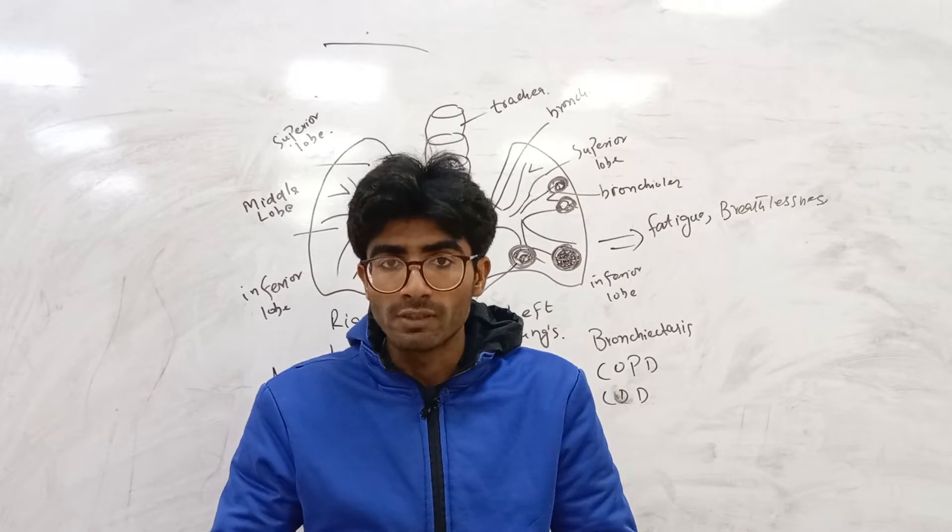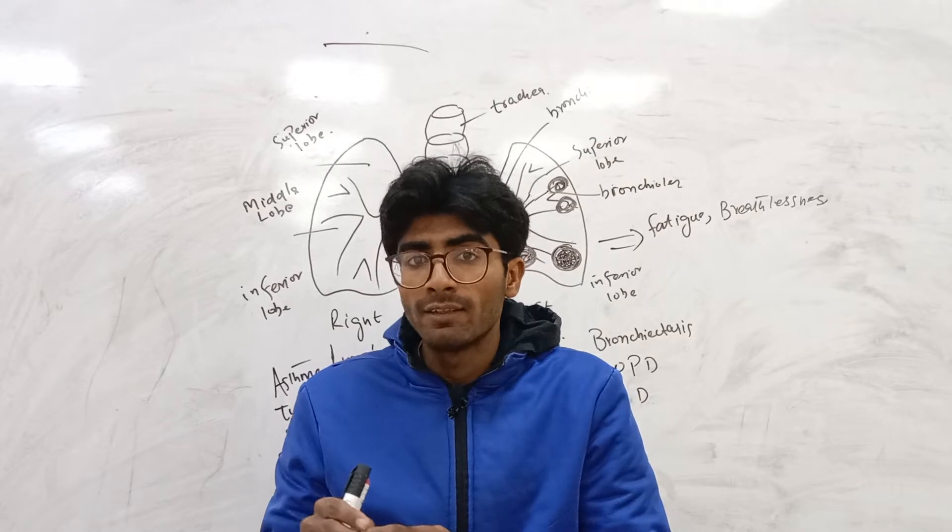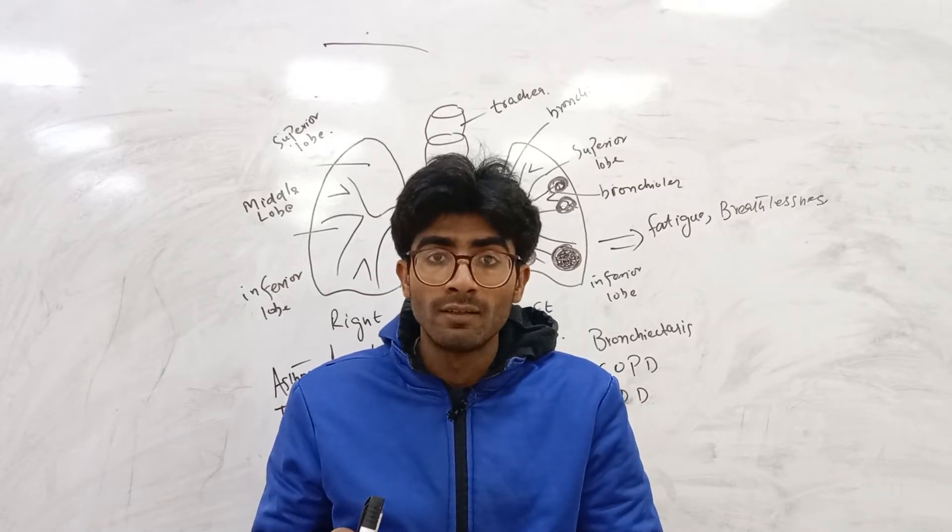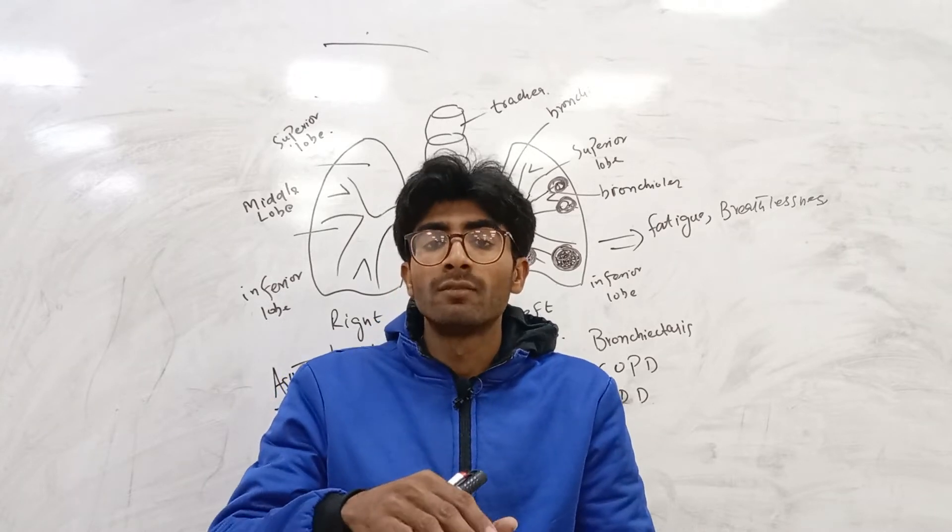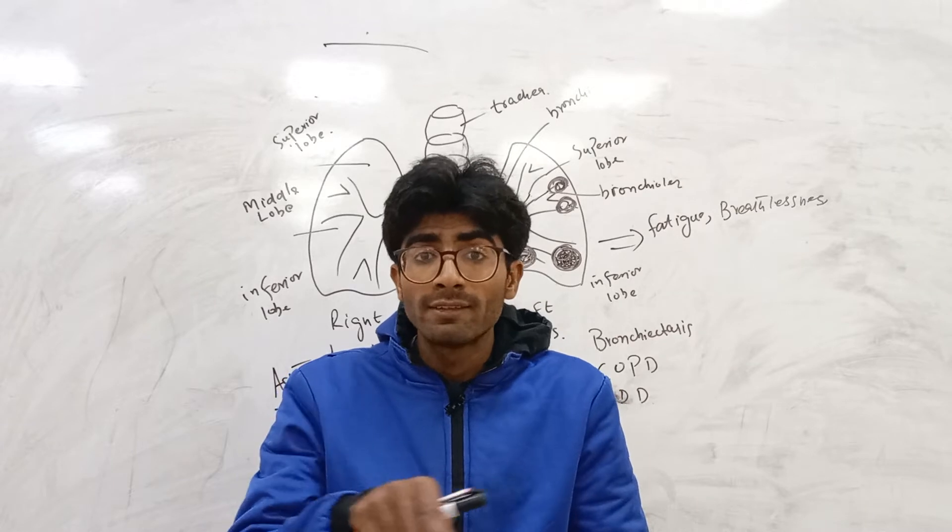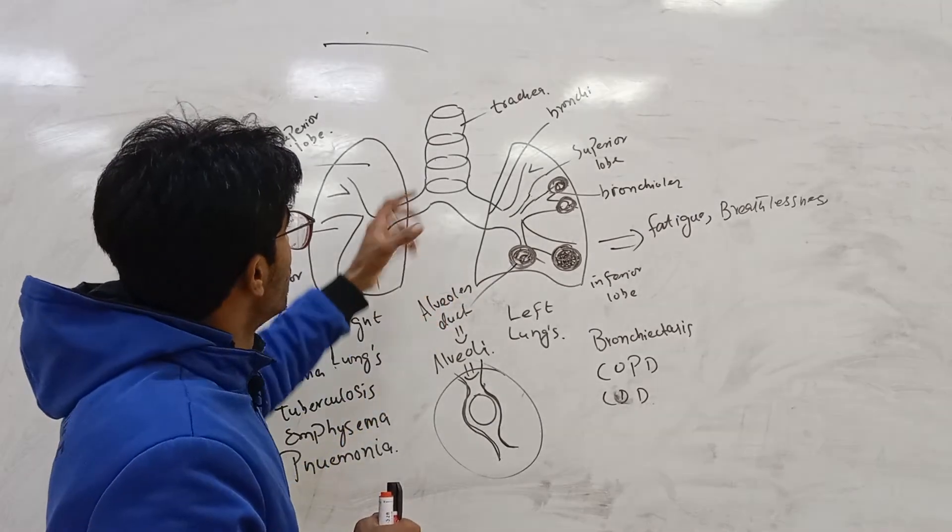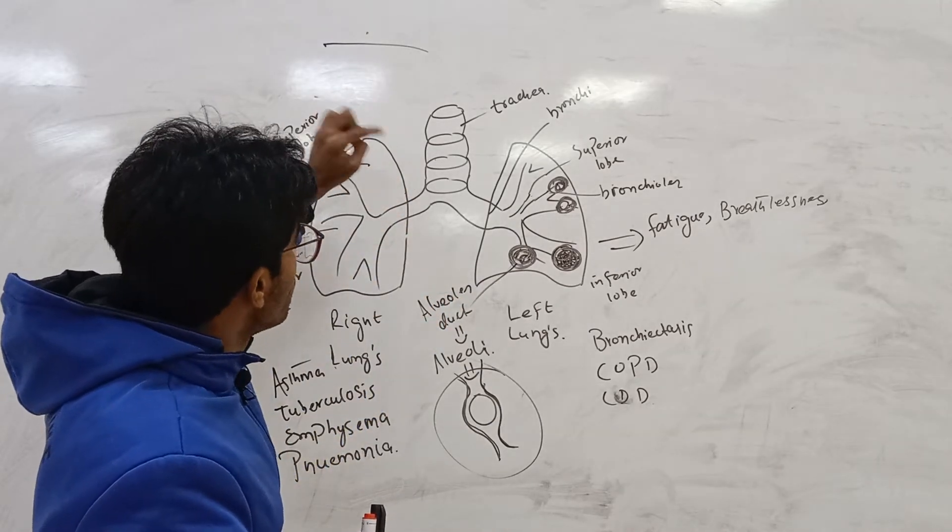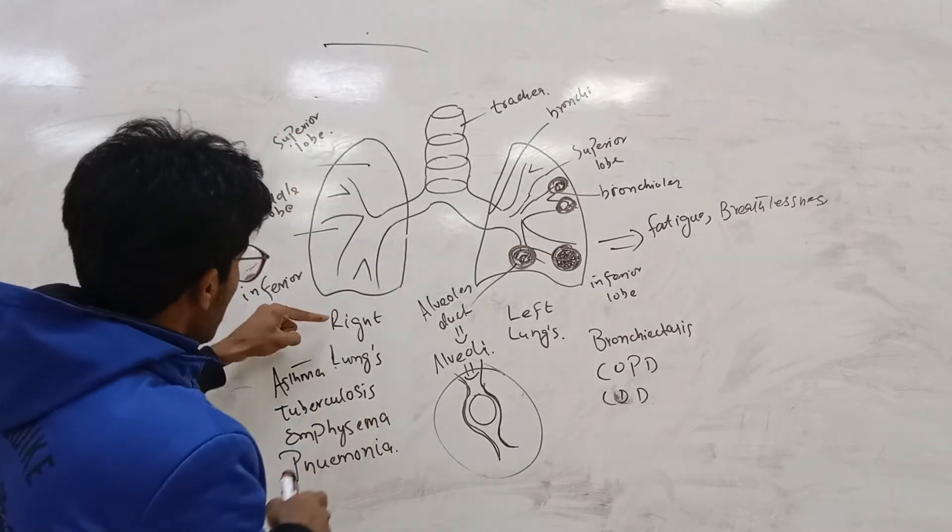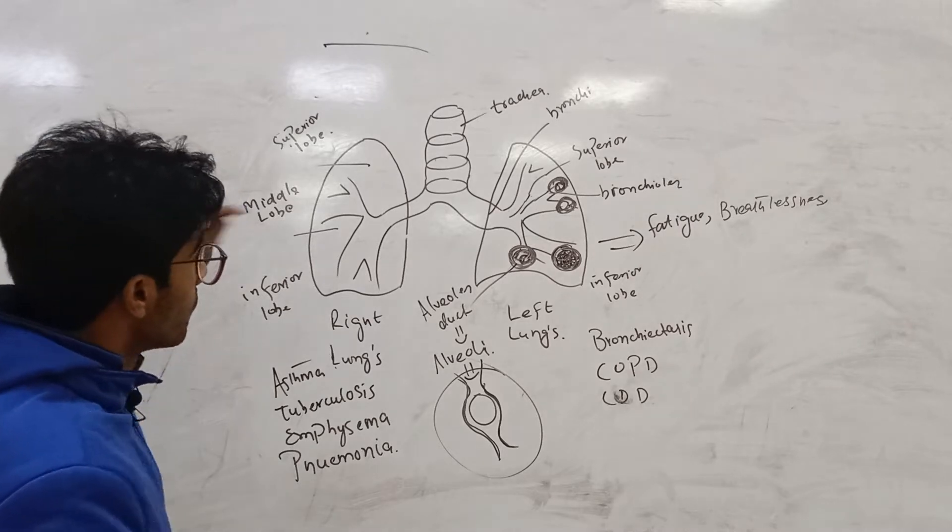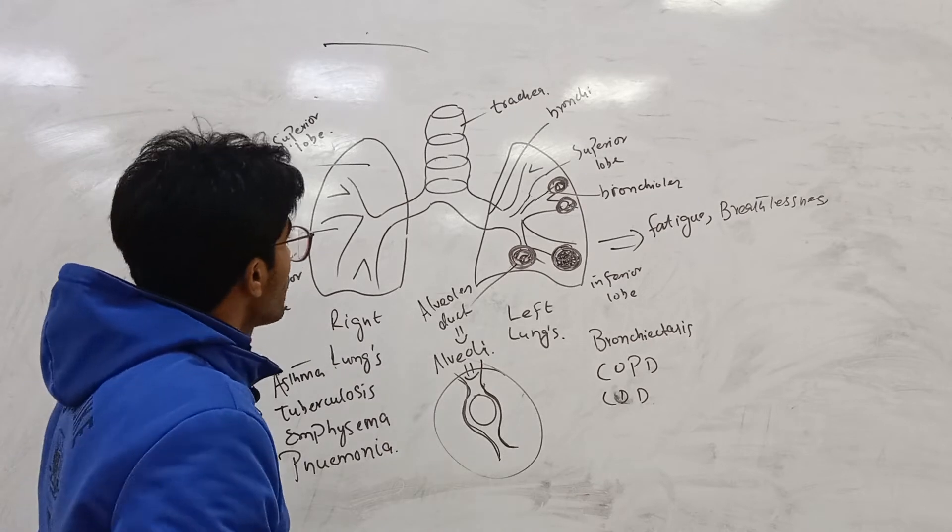From bronchioles, different branches divide. We said it's alveoli, one or more alveoli. That is known as alveolar duct. So simply, it's a trachea, two lungs, pair of lungs. Right lung has superior lobe, middle lobe, and inferior lobe. Left lung has superior lobe and inferior lobe.